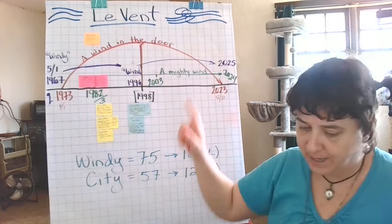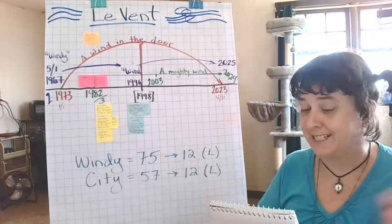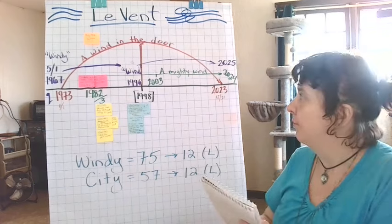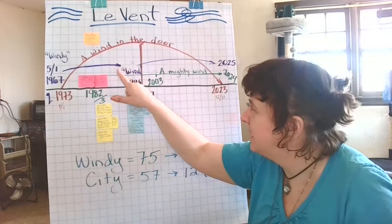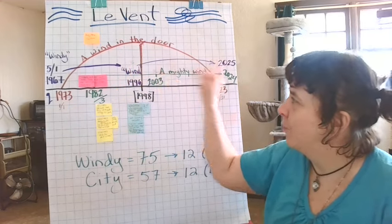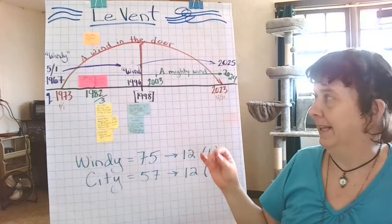So that came out in 03. Let me check my notes here. A Mighty Wind, 416 of 2003. Oh yeah, I have it written in pencil, real smaller. So A Mighty Wind, 416, Windy, 5-1. Same time of year, approximately.